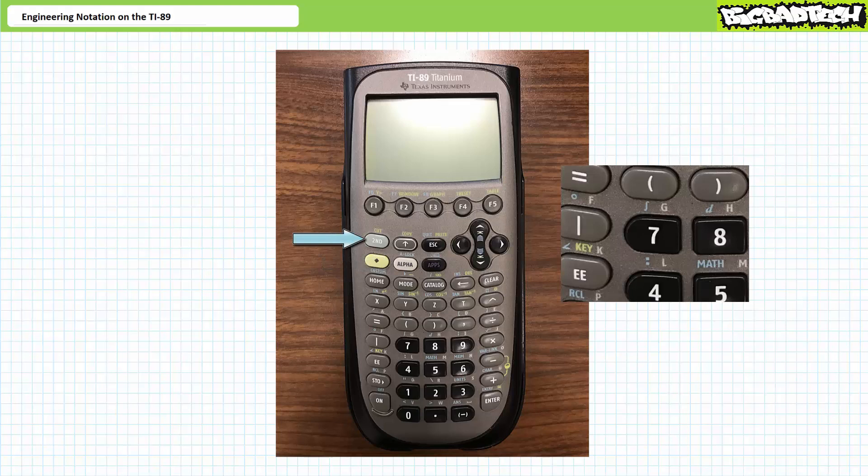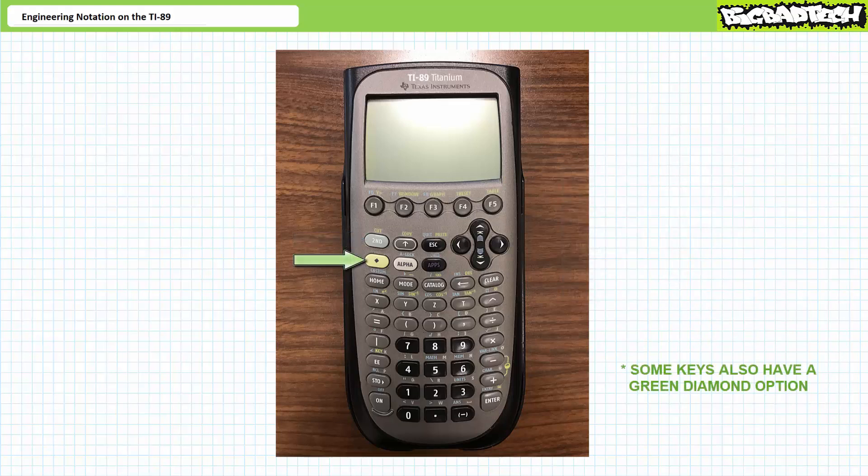If, however, I press a light blue second key modifier, the seven key will write the squiggly worm symbol that we'll use for integrals. Again, as indicated next to the key in light blue. In summary, most keys have more than one option, the unmodified, the second, and the alpha option.